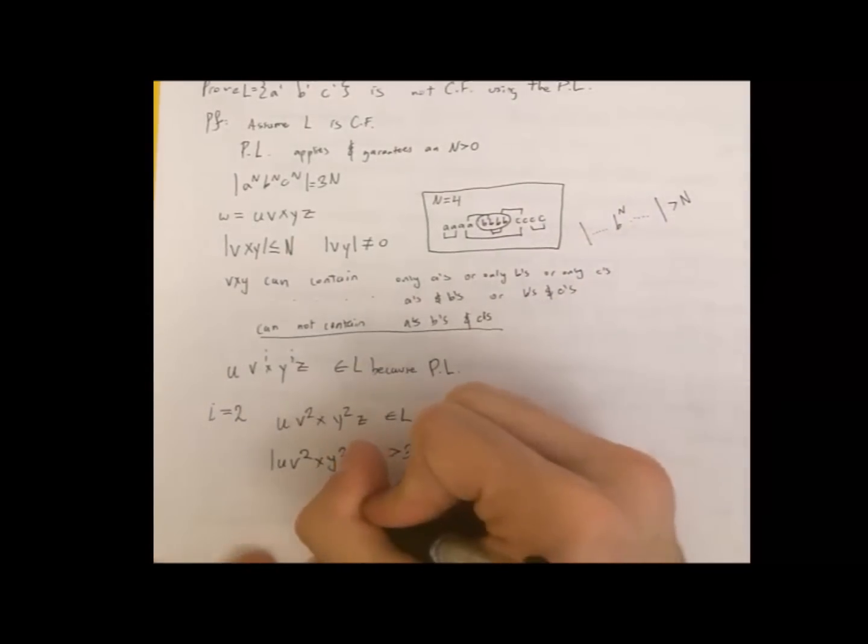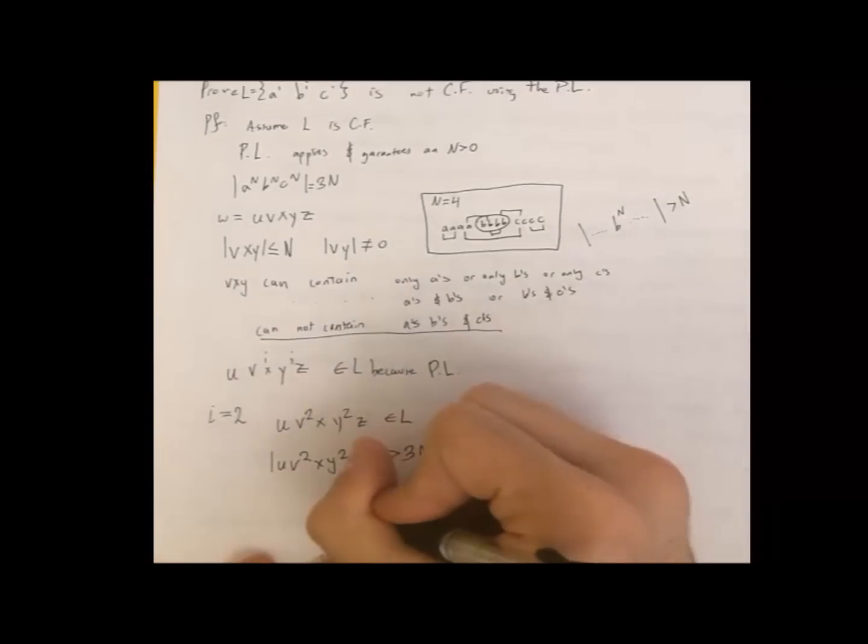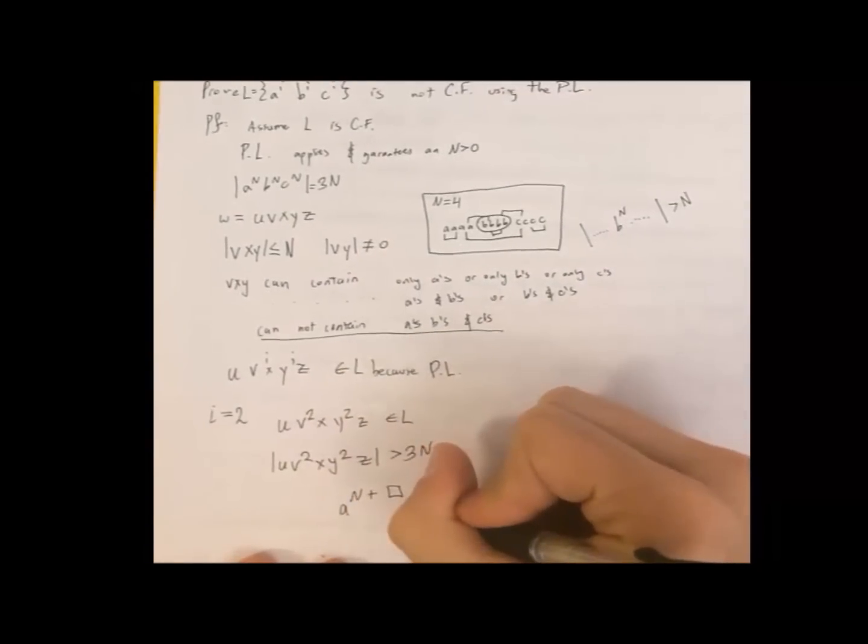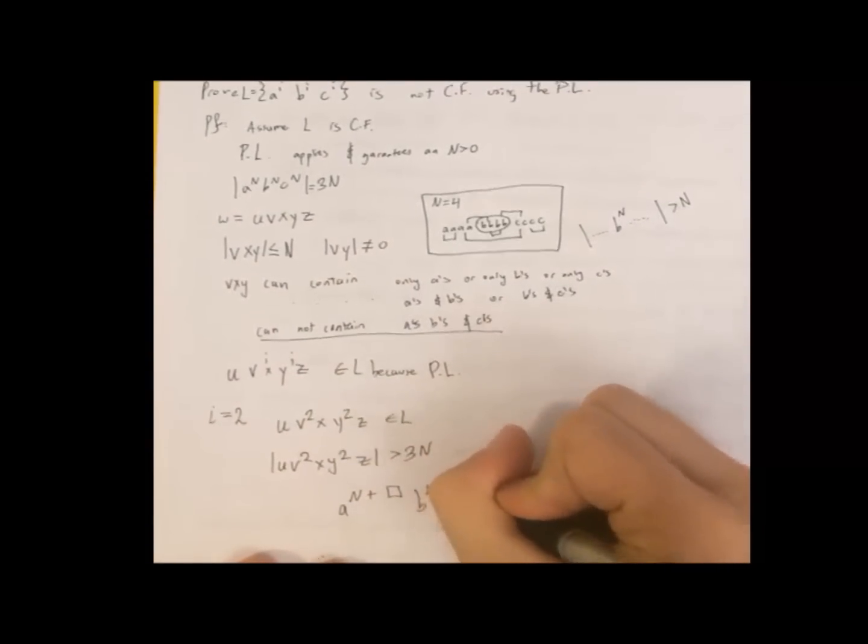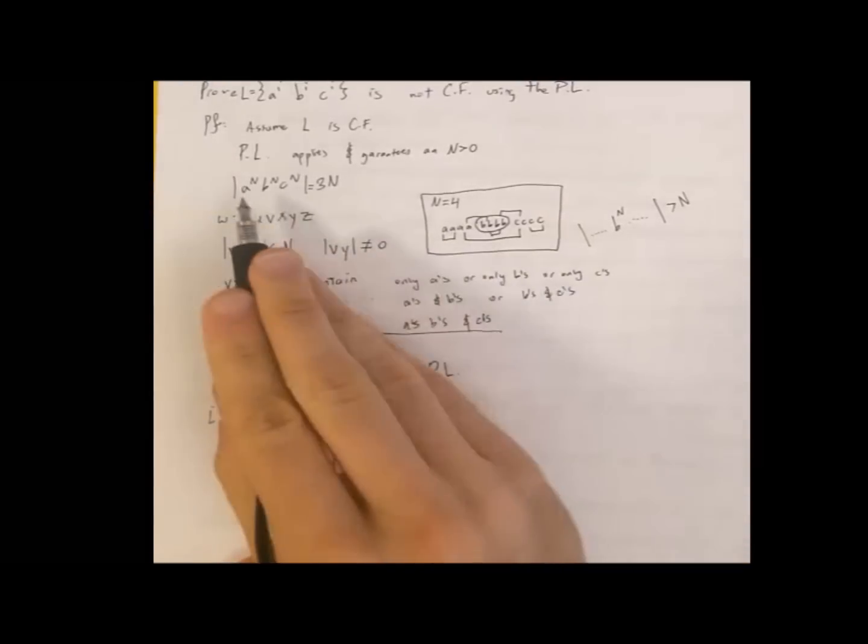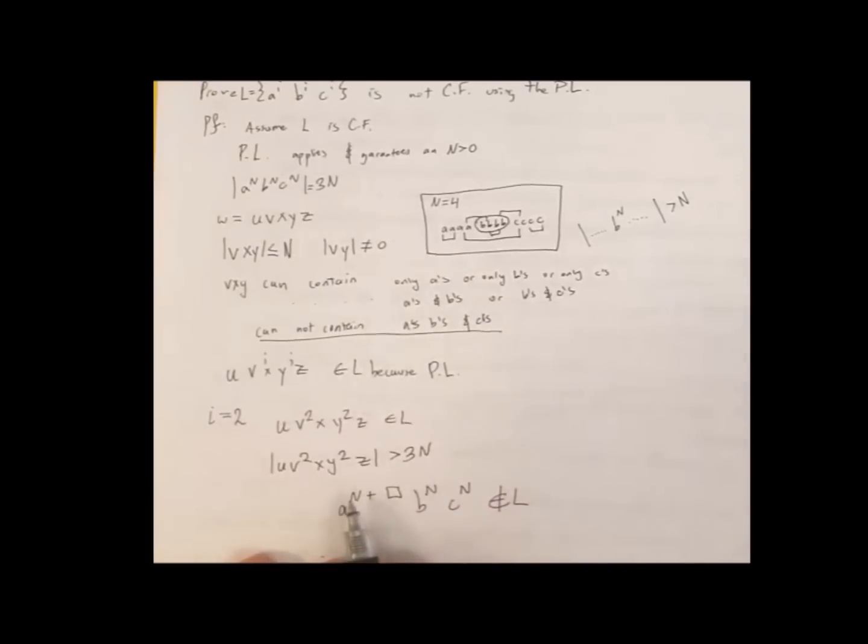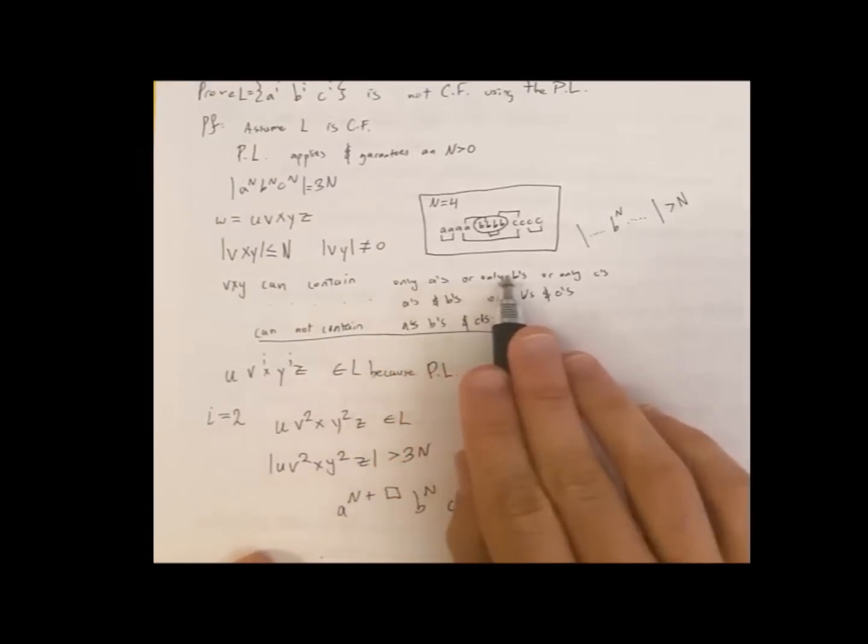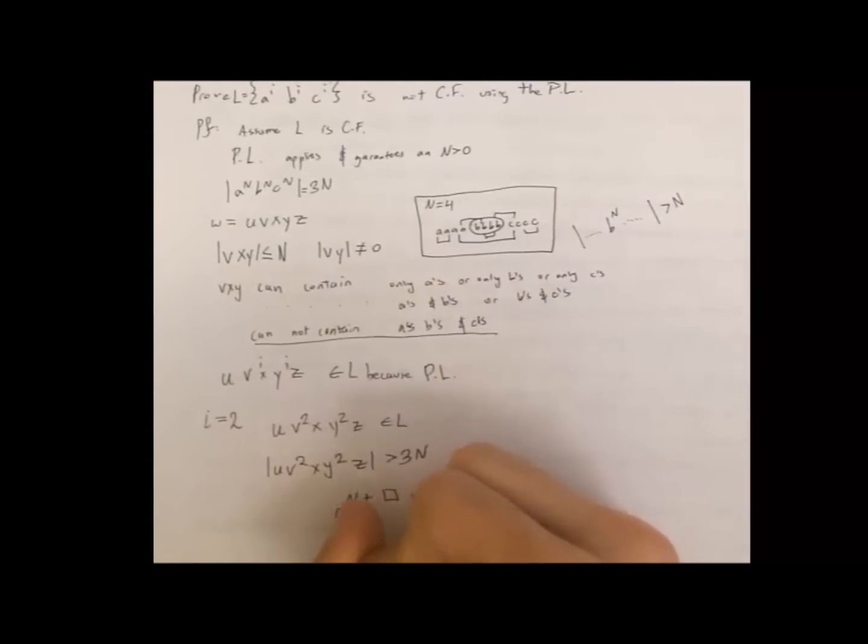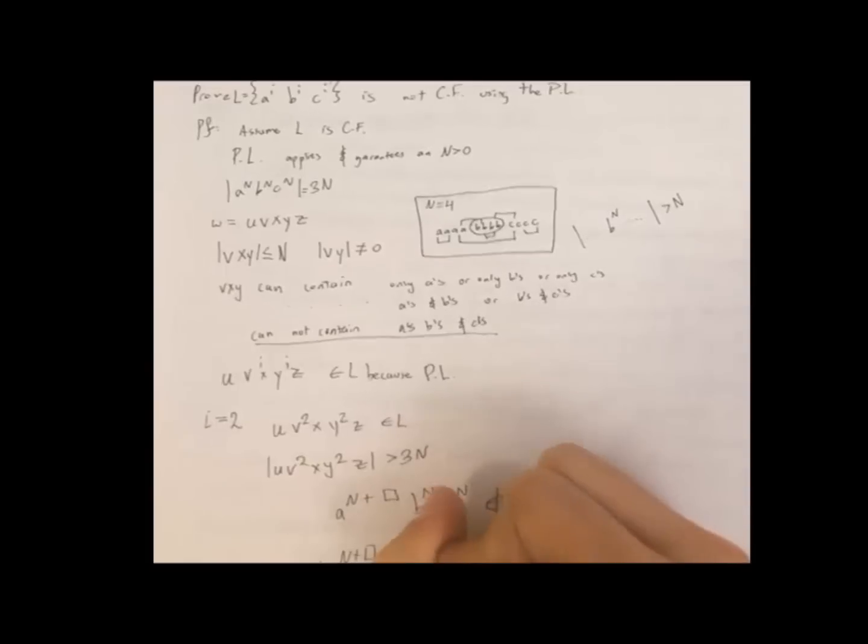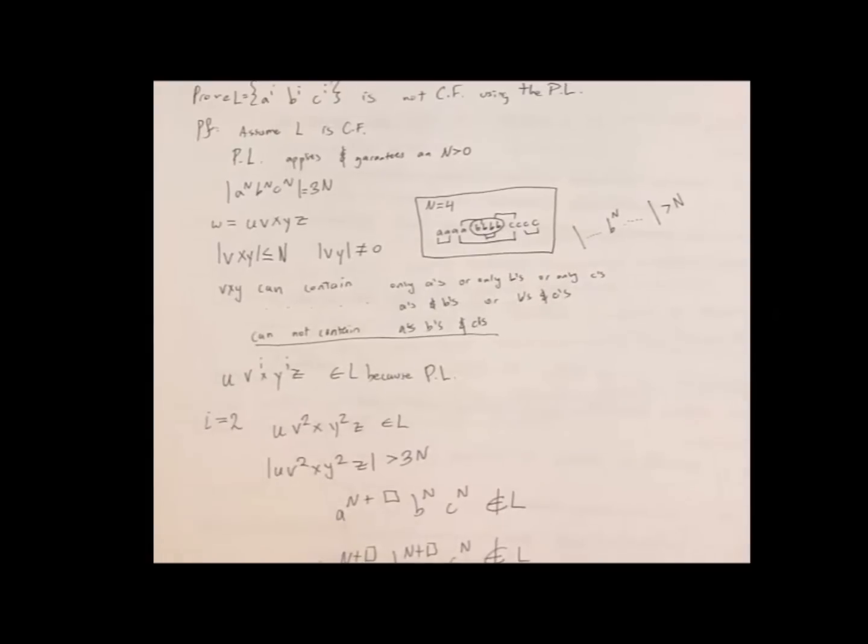So that would mean it's only a's, only b's, only c's, or only a's and b's, or only b's and c's. So for example, let's say we did a to the n plus something, b^n, c^n. This is not in the language. This doesn't match a^n b^n c^n. So you could do this right here for all the cases. You could put this as b and you could put this as c. Now, if it was a's and b's, a^(n plus something), b^(n plus something), and c^n, this does not exist in L. These three don't match also. You could do the same for b's and c's.